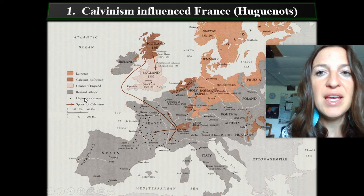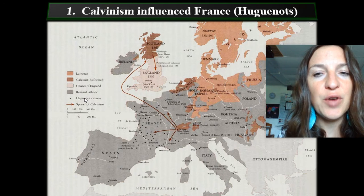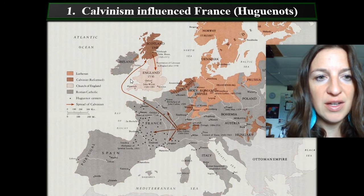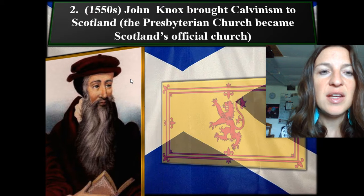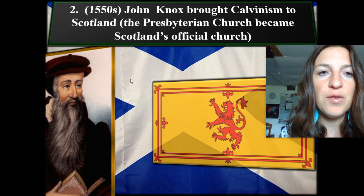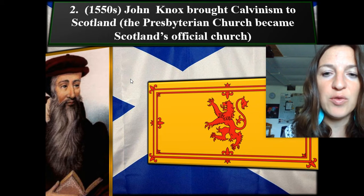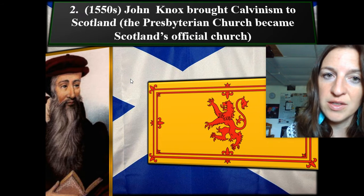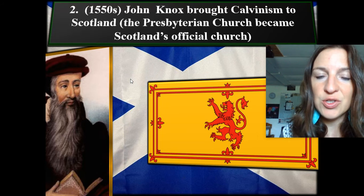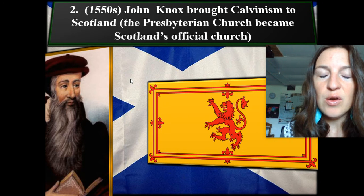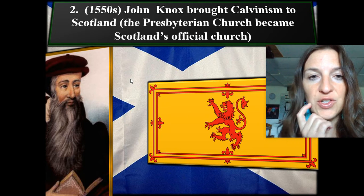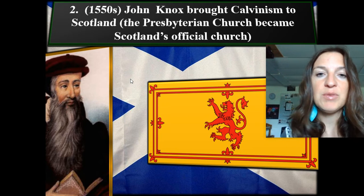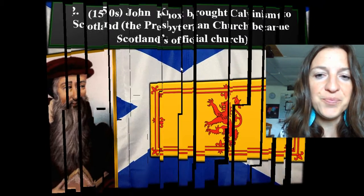Number one: Calvinism influenced France — the Huguenots there — and they were persecuted sometimes. Number two: in the 1550s, John Knox brought Calvinism to Scotland. The Presbyterian Church, which follows some of Calvin's theology, became Scotland's official church — so different than England.